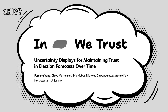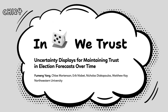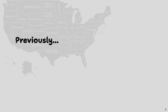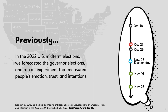During the 2022 U.S. midterm elections, we forecast the government elections in 33 states and built our own forecasting website to measure people's emotion, trust, and intentions before and after elections. This work was published at CHI last year.